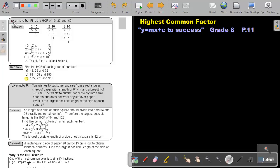Now, first let's look at example 5. Find the highest common factor of 10, 20, and 60. So, the first step will be to do prime factorization. Start with 10 and break it up into the product of prime factors. Do the same with 20 and do the same with 60.